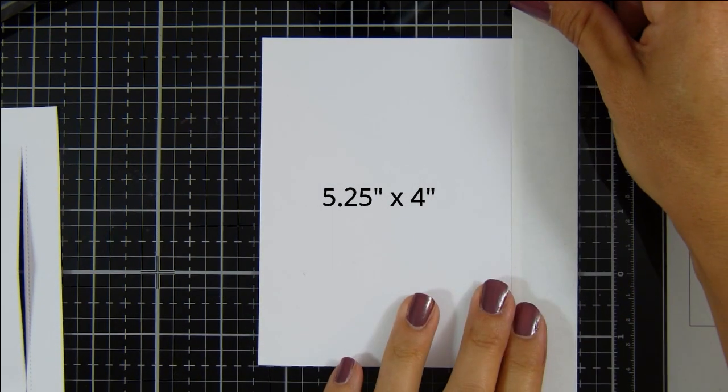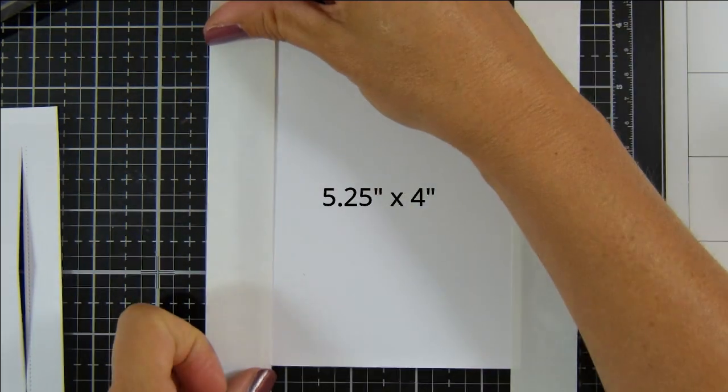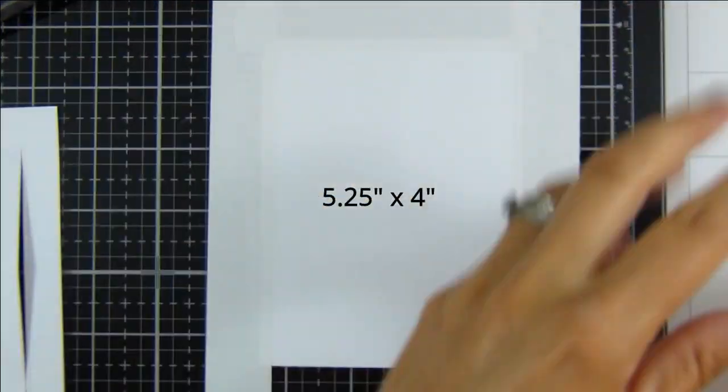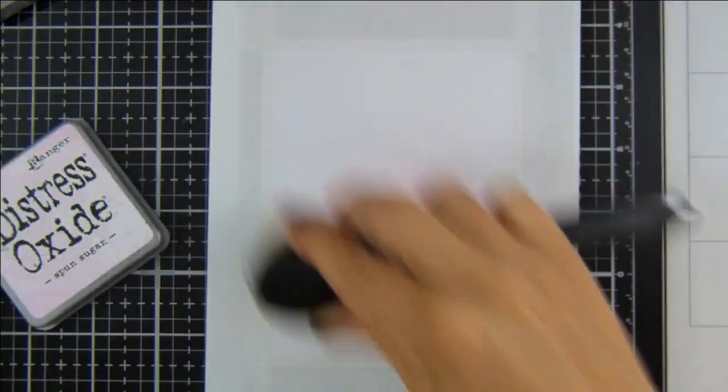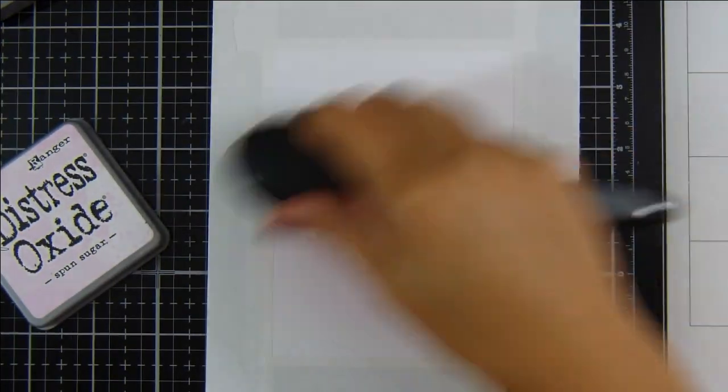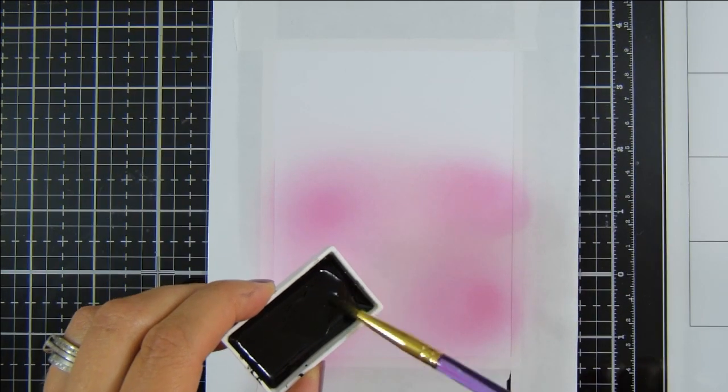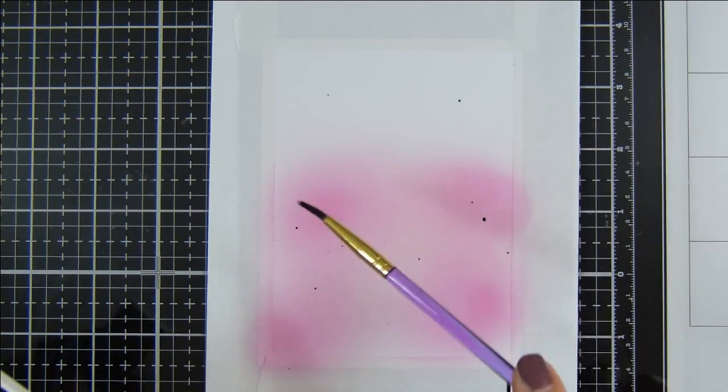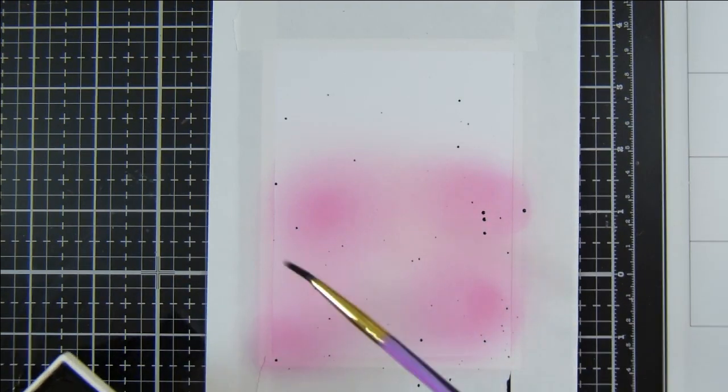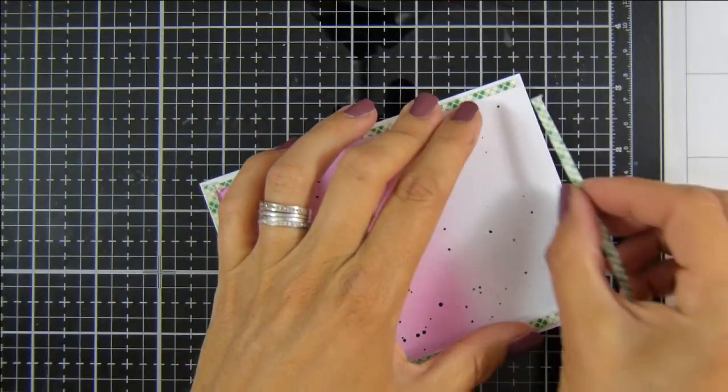For the second part of our card today, we are making our shaker panel, and this measures five and a quarter by four inches, so slightly smaller than the other panel. Coming in with some distress oxide inks in the same color as before. As you pull back the sliding window panel, this is the shaker panel you're going to see, so I wanted to add some color, but I'm not being too particular about the style.